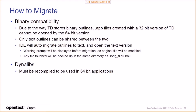How to migrate — binary compatibility: due to the way TD stores binary outlines, .app files created with a 32-bit version of TD cannot be opened by the 64-bit version. Only text outlines can be shared between the two. The IDE will automatically migrate outlines to text and open the text version. A warning prompt will be displayed before migration, as the original file will be modified. Dynalibs must be recompiled to be used in 64-bit applications, so if you're creating both 64-bit and 32-bit versions, you need two versions of your Dynalibs.